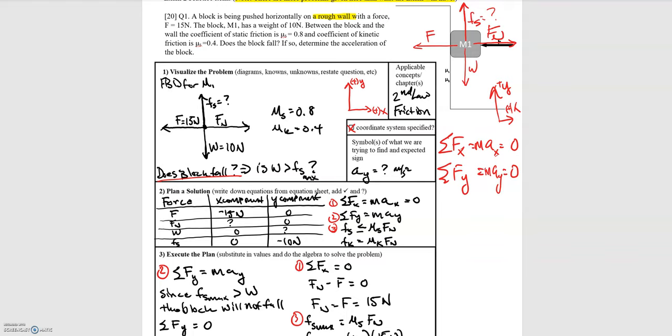That's the approach to this problem. 'Does the block fall?' translates in physics terms to: is the weight force greater than the maximum static frictional force? If the weight force is greater, the block falls. If the maximum static frictional force is greater than or equal to the weight force, the block doesn't fall, and the static frictional force will equal the weight.